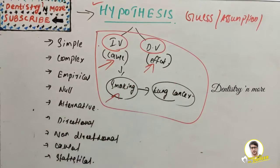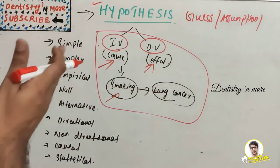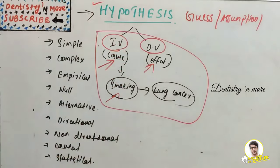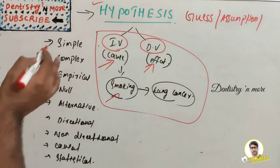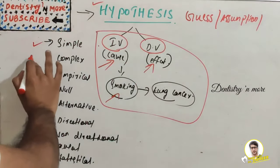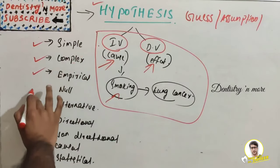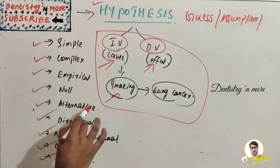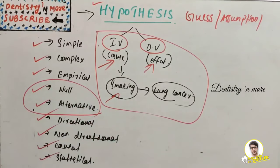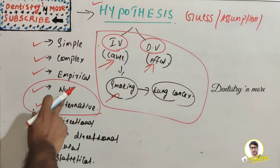When we say smoking causes lung cancer, that is a hypothesis — we don't have any proof for that yet. Any study starts with a hypothesis. At the beginning of a study, we don't have a confirmatory statement; we have just an assumption or a guess. The classifications include: simple hypothesis, complex hypothesis, empirical hypothesis, null hypothesis, alternative hypothesis, directional, non-directional, causal, and statistical. Among these, null hypothesis and alternative hypothesis are the most important.